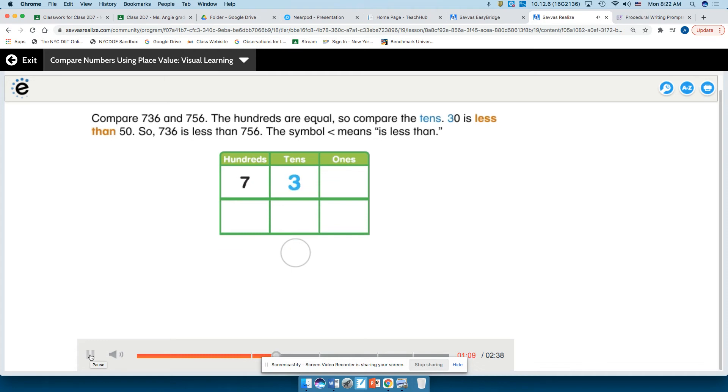Compare 736 and 756. The hundreds are equal, so compare the tens. 30 is less than 50, so 736 is less than 756. The symbol means is less than.